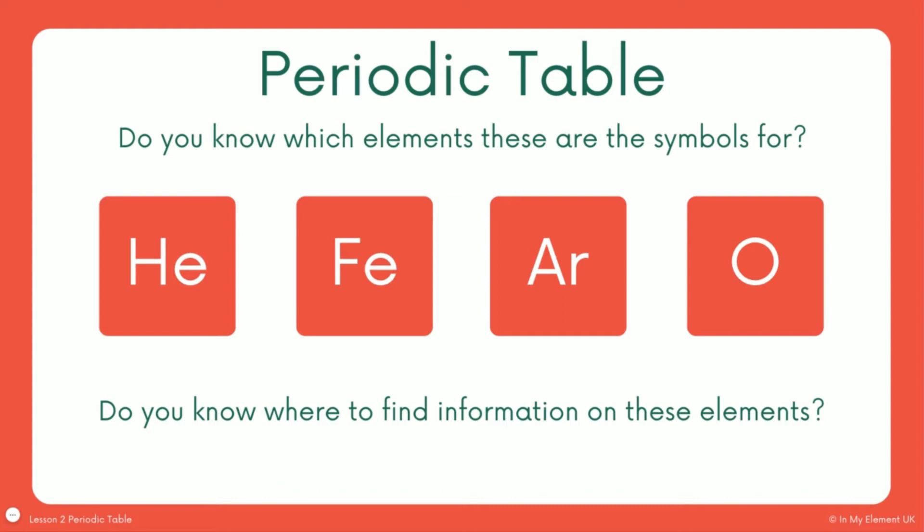So do you also know where to find the information on these elements? Where would you find those symbols and then learn the name and also maybe find out a little bit of their properties? I'm hoping that at this point you would know that they are in the periodic table.